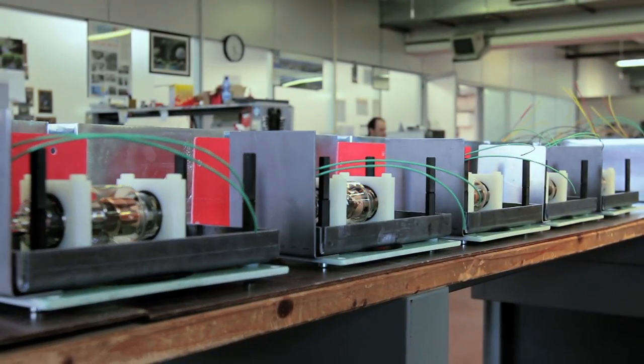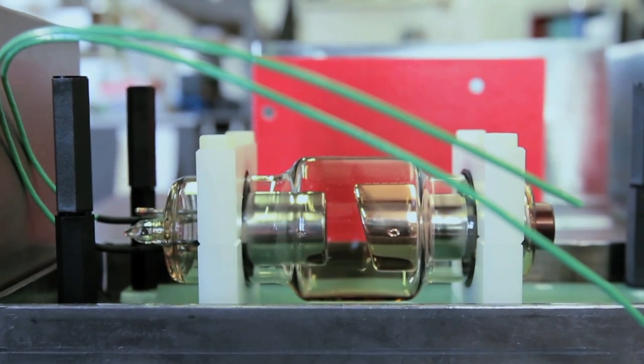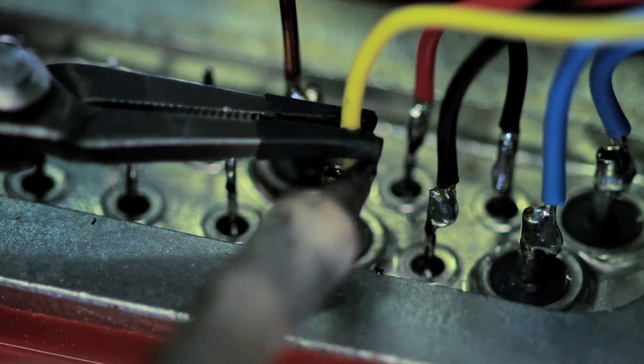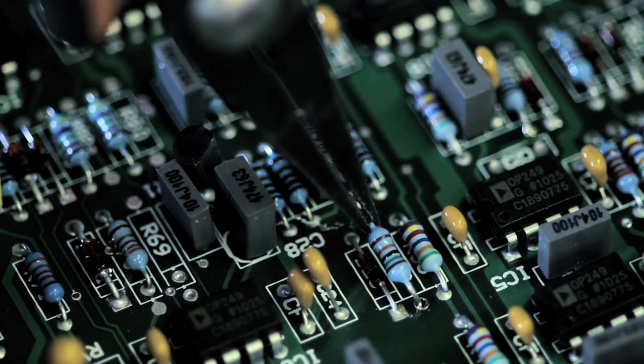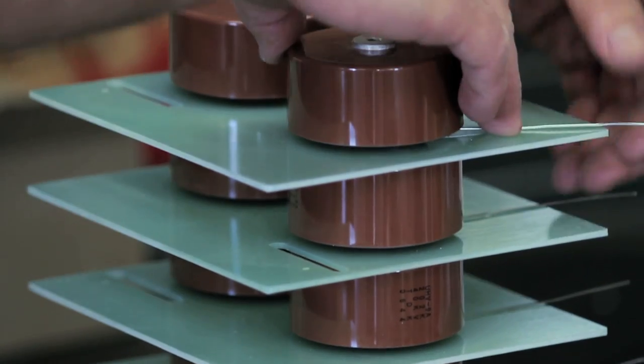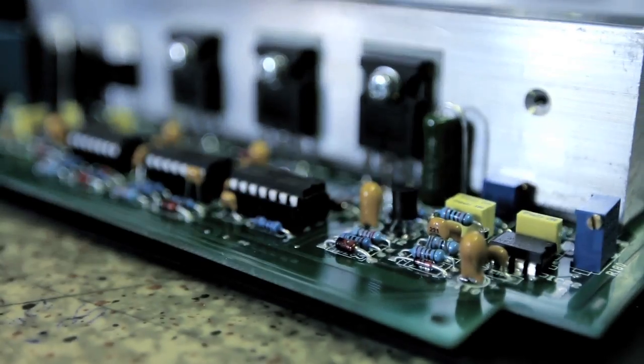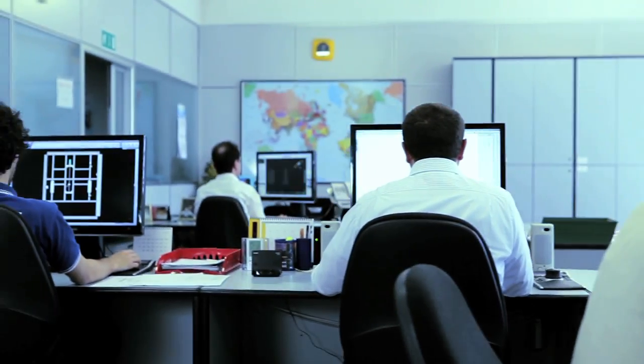The high voltage division produces x-ray monoblock generators and high voltage generators of up to 450 kV. Its products are also appreciated in the medical field, in food control and for measurement applications.